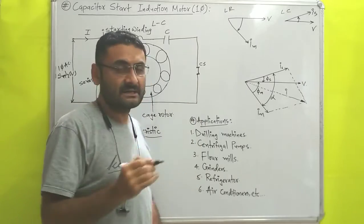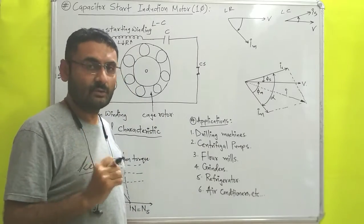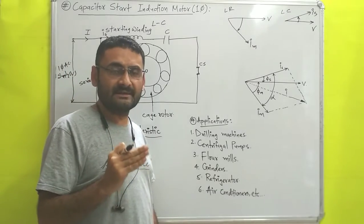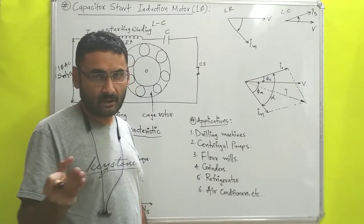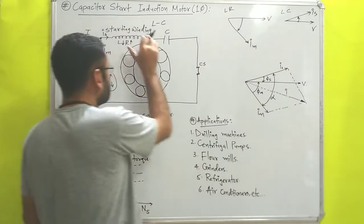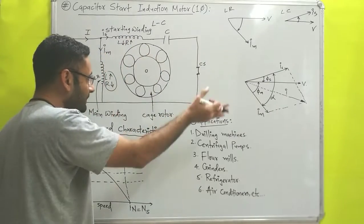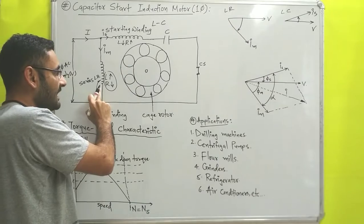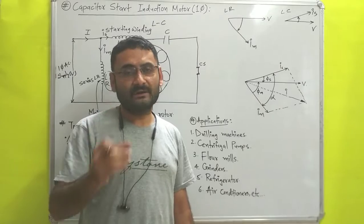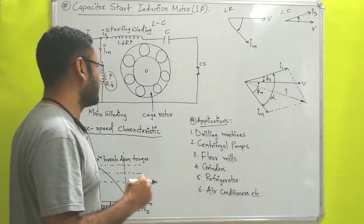One centrifugal switch is connected in series with the capacitor. This centrifugal switch is generally in the closed condition and it is an automatic switch. When the rotor starts to rotate and reaches up to 70% of its normal speed, the centrifugal switch will open, separating the starting winding from the main circuit. After that, the rotor continues to rotate with the help of the main winding only.